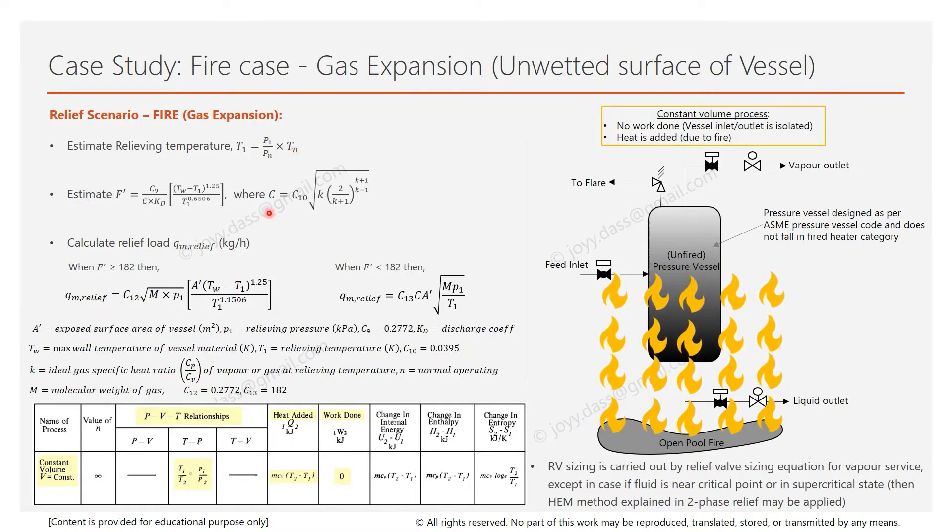Next we calculate C using this formula, where C10 is a factor and k is the ideal gas specific heat ratio at relieving temperature. The calculated C is used here to estimate the F', where C9 is another factor and kd is the discharge coefficient, typically used as 0.975.